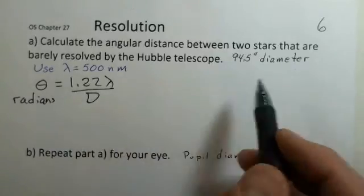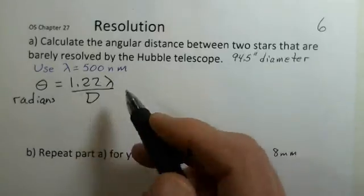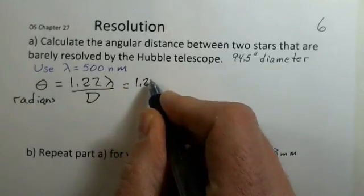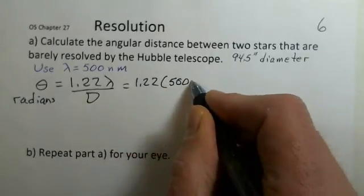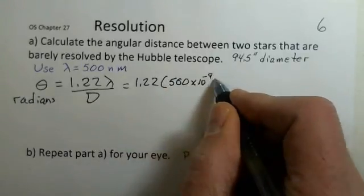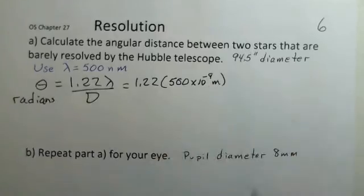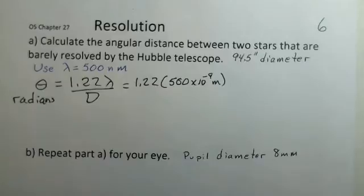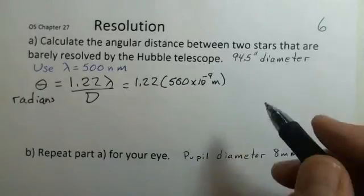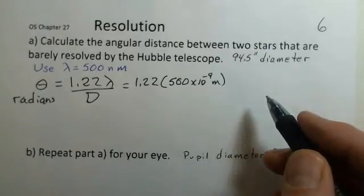In this situation, we know the wavelength is 500 nanometers. You can see this is going to be a pretty straightforward calculation. However, the meters here, we need meters for the diameter.